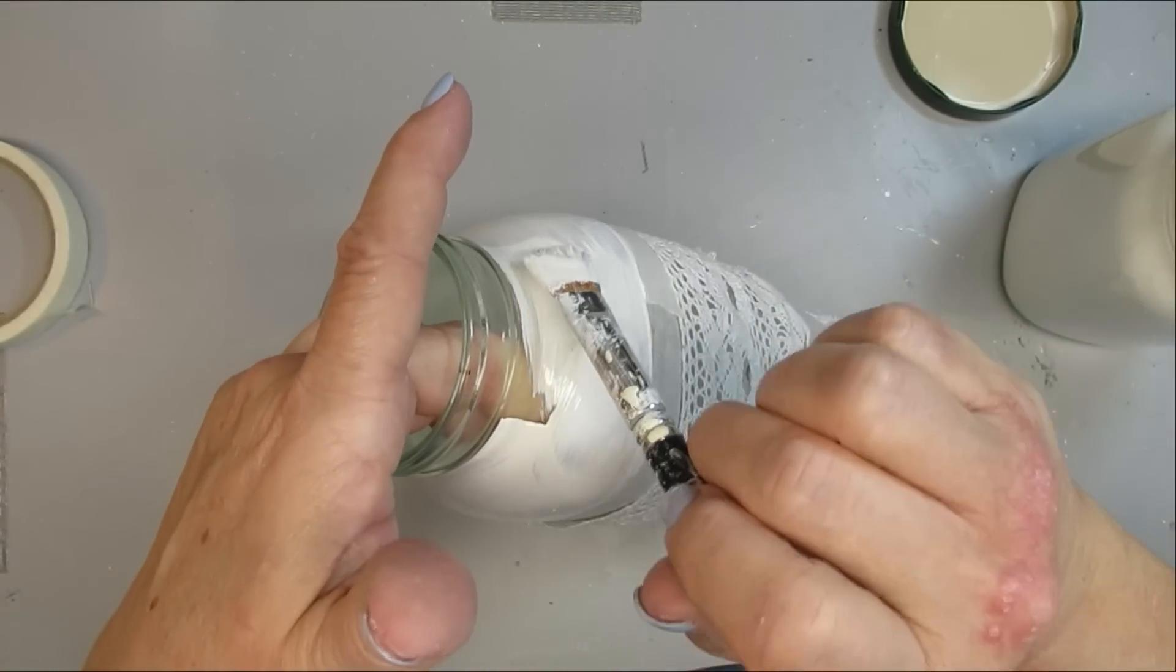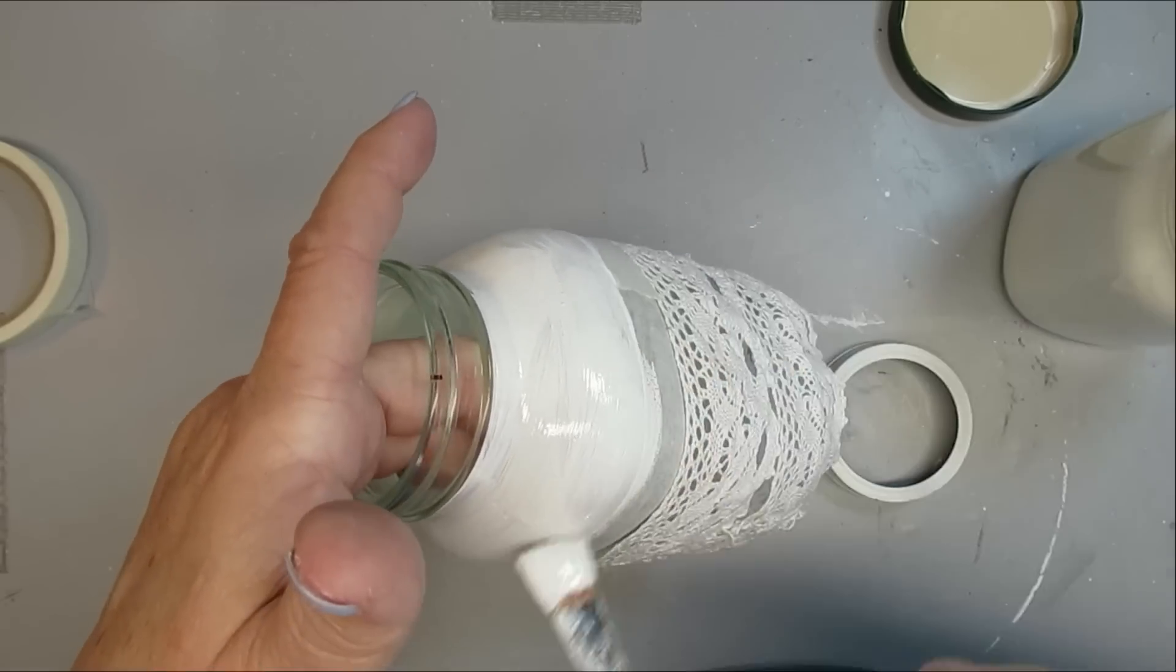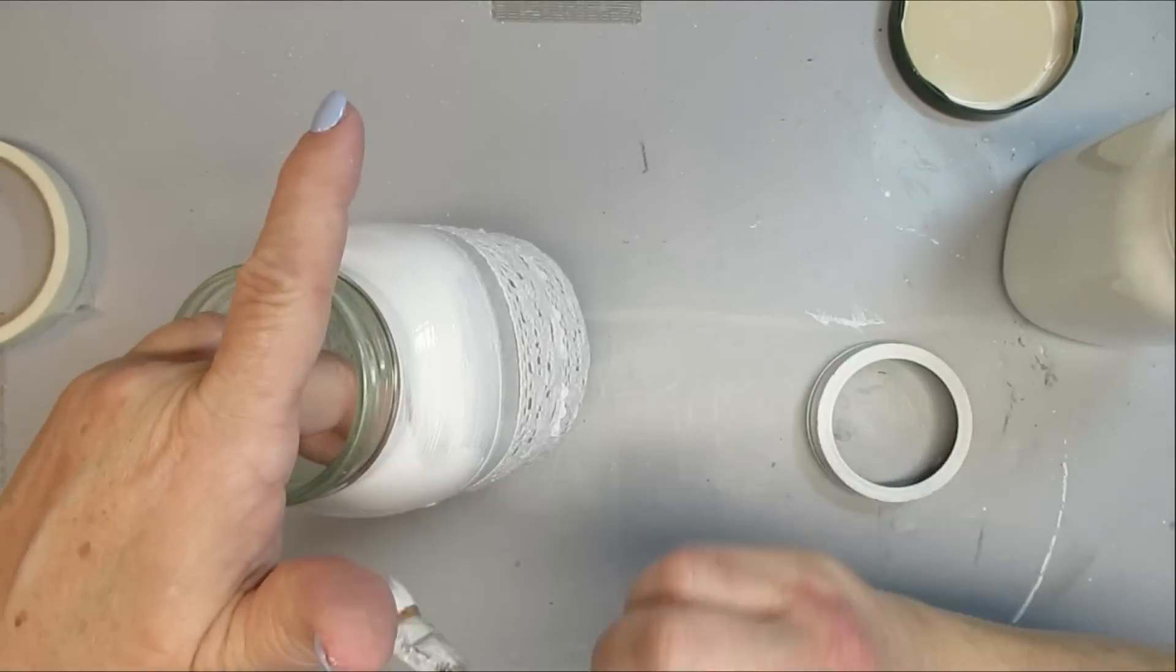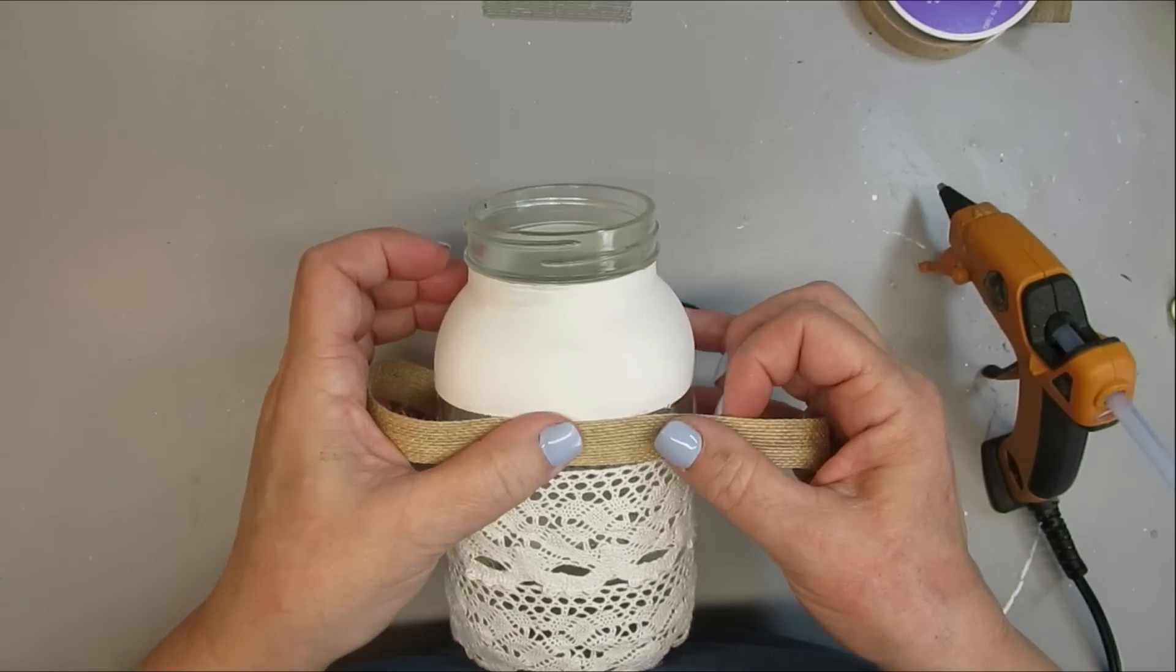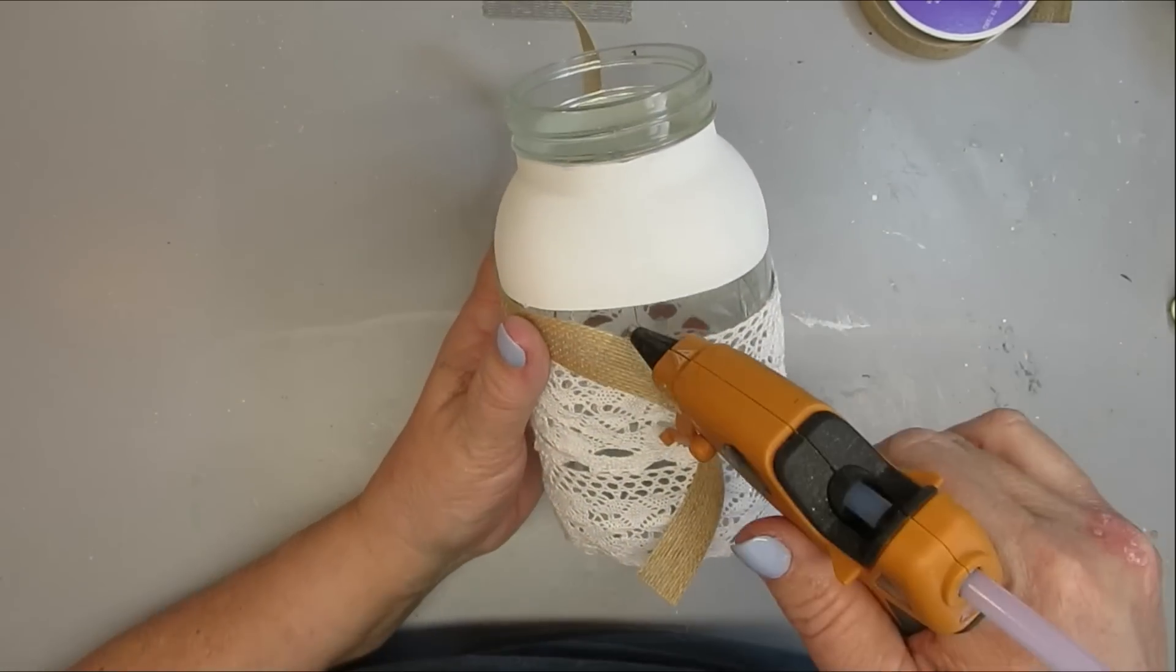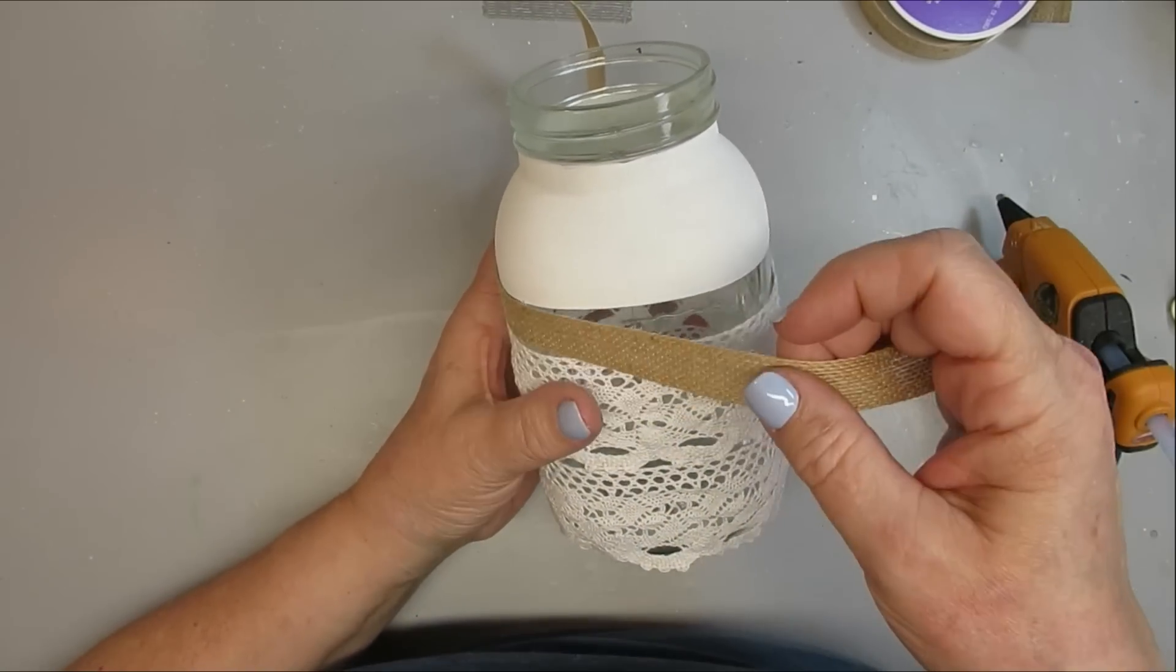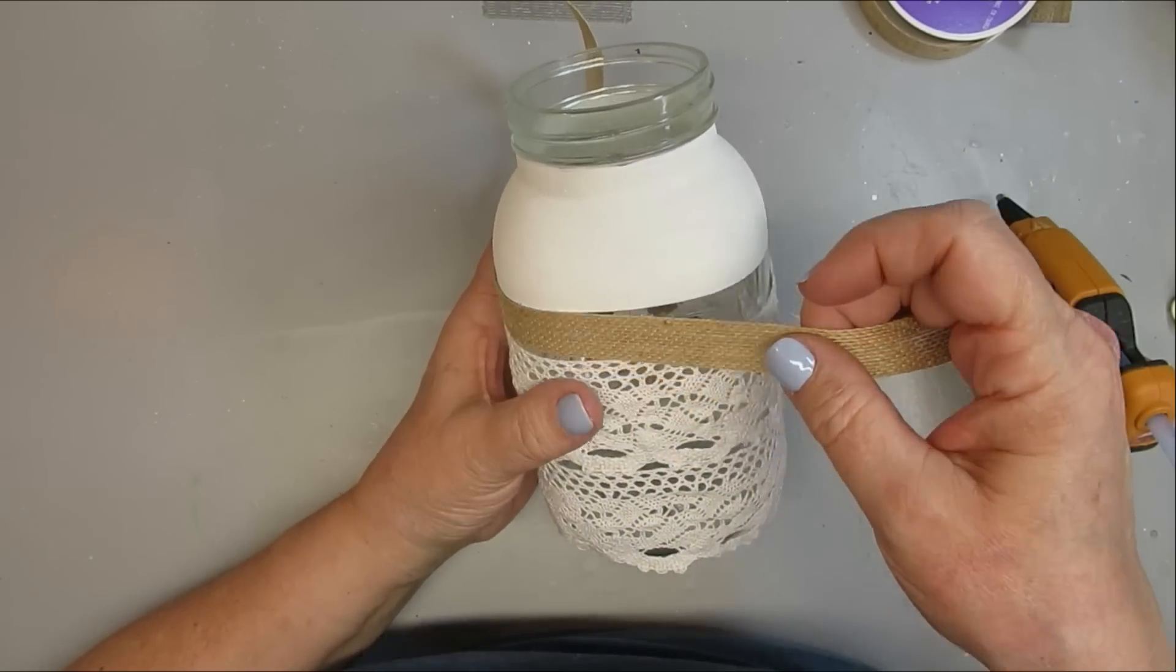I wanted it to be not your typical mason jar decor piece. When I remove the tape, I'm left with this clear band. I'm going to add some burlap ribbon. You don't have to do this, but I thought it framed all the lace and the white out really pretty.